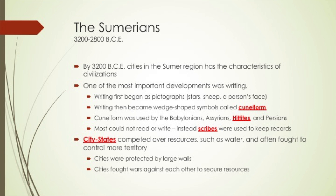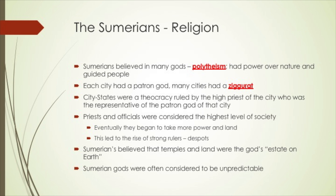Many of the city-states in Sumeria competed over resources, especially water, and they often fought to control more territory and thus more resources. As a result, cities were protected by very large walls, and the city-states fought against each other in wars in an effort to secure the resources that they needed.